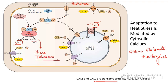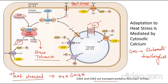Under heat stress, large amounts of GABA are synthesized. These GABA molecules help in stress tolerance. GABA is synthesized from glutamate by the enzyme GAD, and for the enzyme to become active, calcium-activated calmodulin is required.